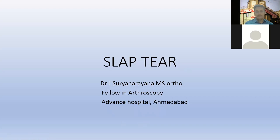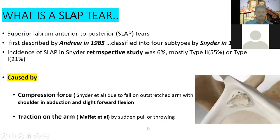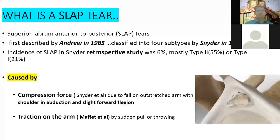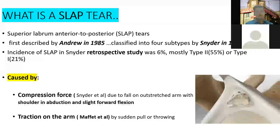Good morning. I'm Surya Narayan. My topic for today is the SLAP tear in the shoulder joint. These are one of the important, very intriguing pathologies which always pose a diagnostic challenge clinically and radiologically. In brief, I want to give an introduction about what is a SLAP tear — it is a superior labrum tear extending anterior to posterior.